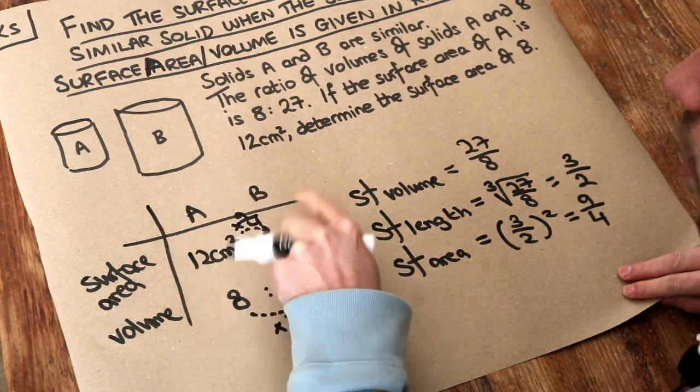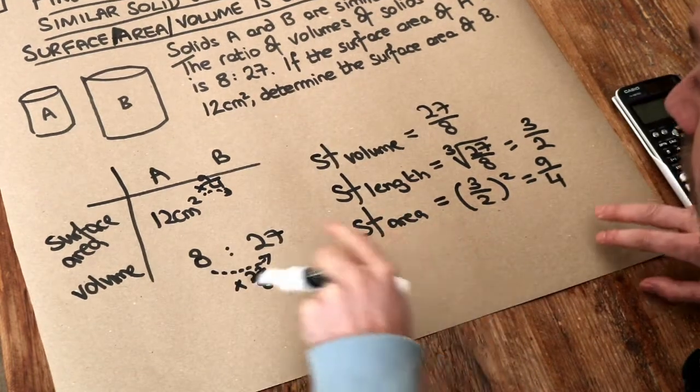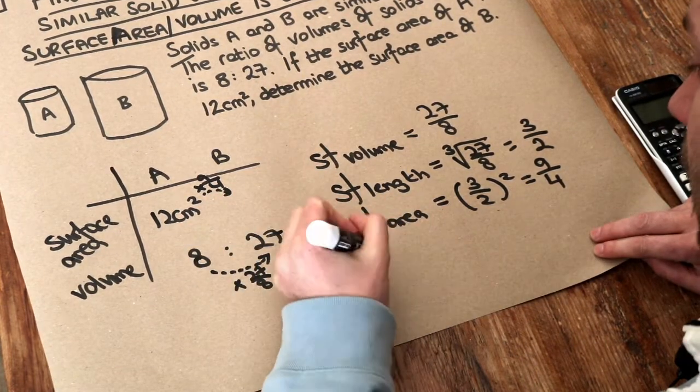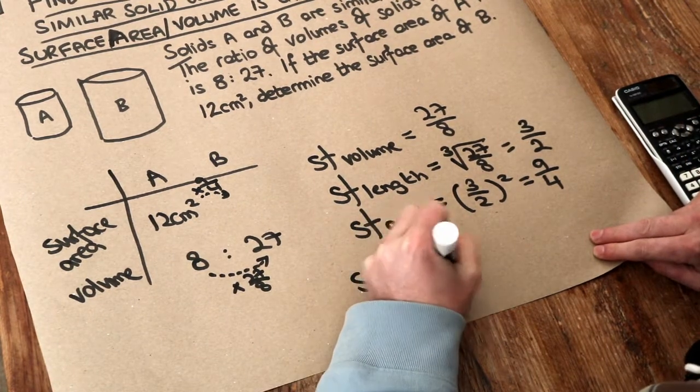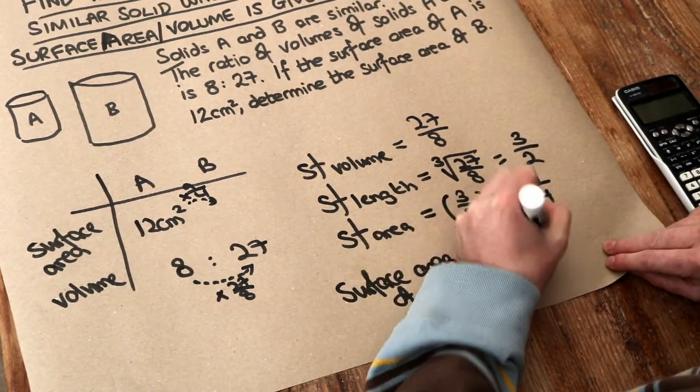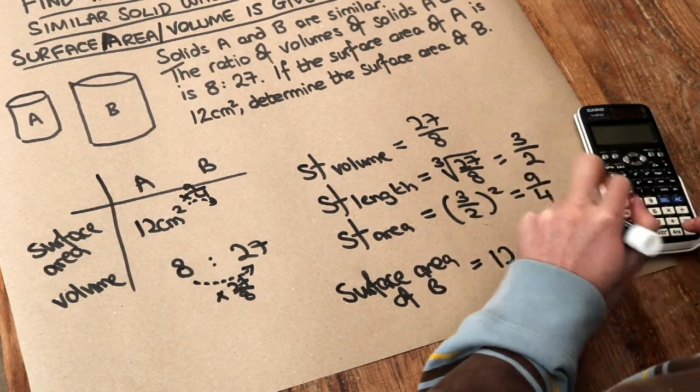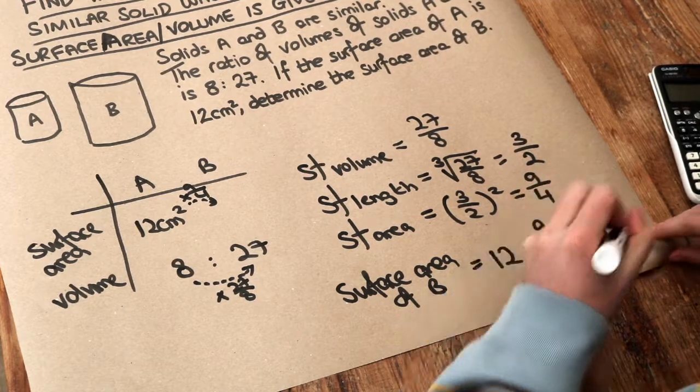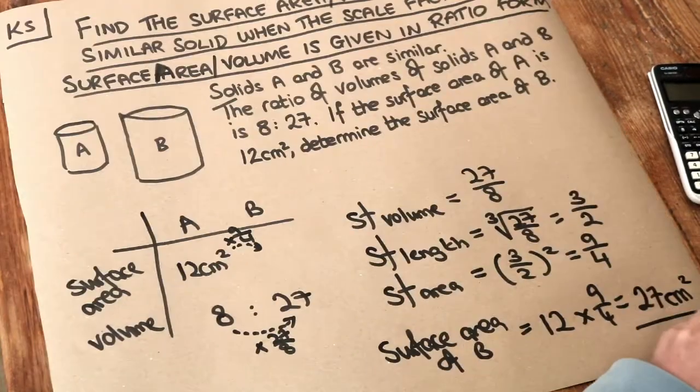So we just need to multiply the 12 by 9 over 4. The surface area of B is just 12 multiplied by 9 over 4, and that gives us 27, and let's put the correct unit, centimeters squared. And that is the final answer.